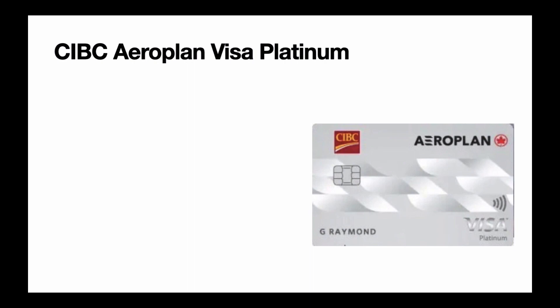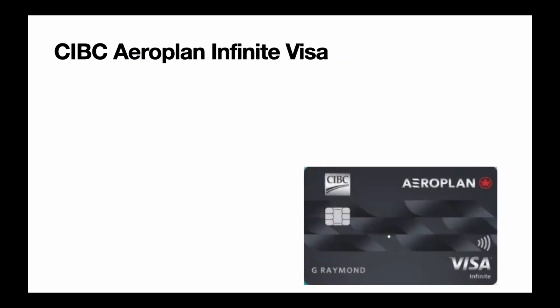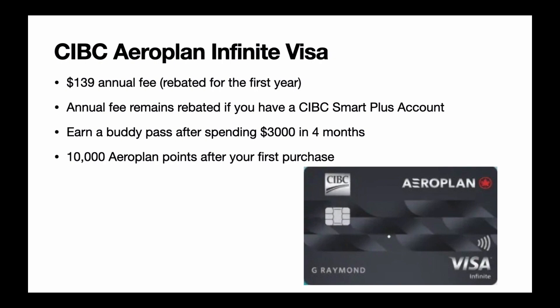Next is the CIBC Aeroplan Visa Platinum card — 10,000 Aeroplan points after your first purchase, entry-level, with no annual fee for the first year. Next is the CIBC Aeroplan Infinite Visa card. It has a $139 annual fee, rebated for the first year and continuously rebated if you have a CIBC Smart Plus account. You get a buddy pass after spending $3,000 within the first four months, and 10,000 Aeroplan points after your first purchase. This is the card the host personally holds. It is a core-level Aeroplan credit card.